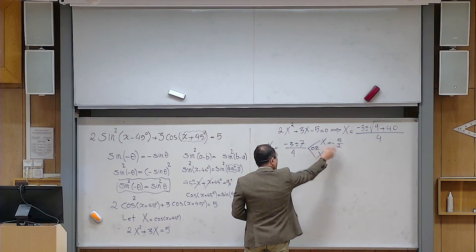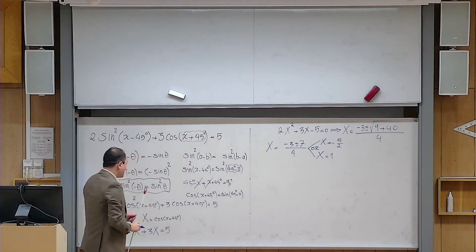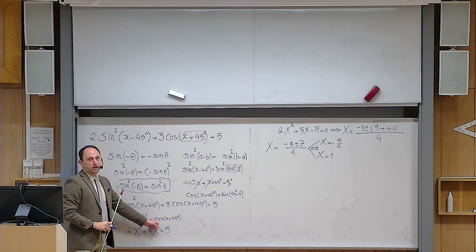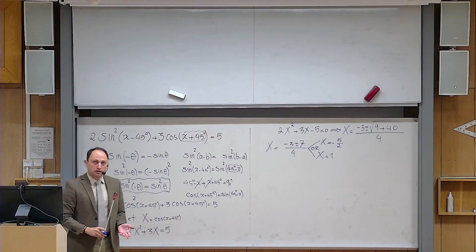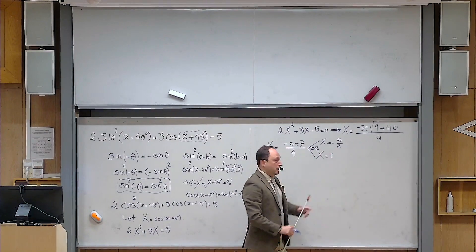So I have two answers, either that one or this one. But of course, in this context, the first one is not acceptable. Why? Because X is cosine of some angle, and we know that cosine is minimally minus 1. But minus 5 over 2 is minus 2.5, so it's not acceptable.